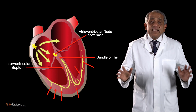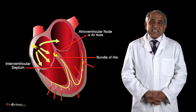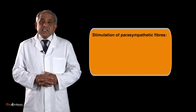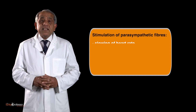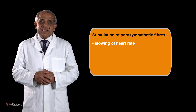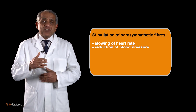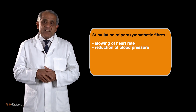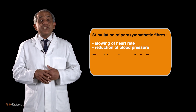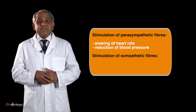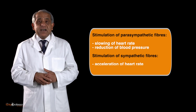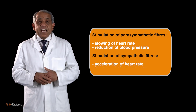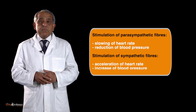It is a completely automatic system. Stimulation of the parasympathetic fibers that innervate the heart results in a slowing of the heart rate and a reduction in blood pressure, whereas stimulation of the sympathetic fibers results in an acceleration of the heart rate and an increase in blood pressure.